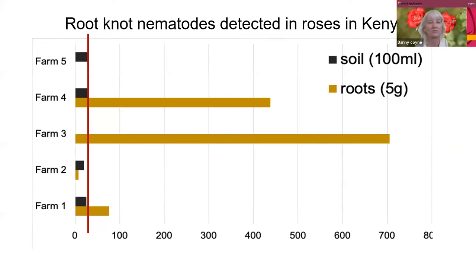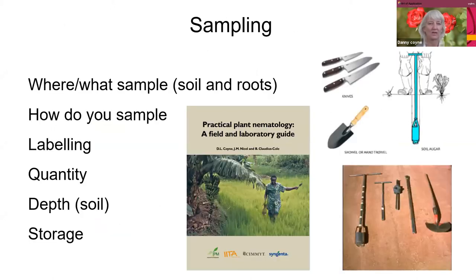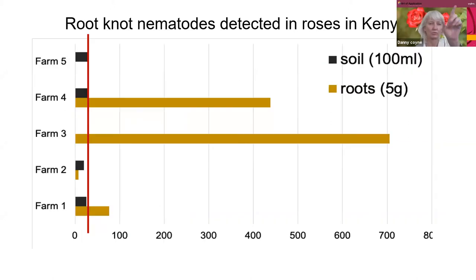This is just an example, and that red line is kind of the threshold — there are like 25 nematodes per 5g of roots. This is just to show you that nematodes are a problem in roses in Kenya, amongst other crops.